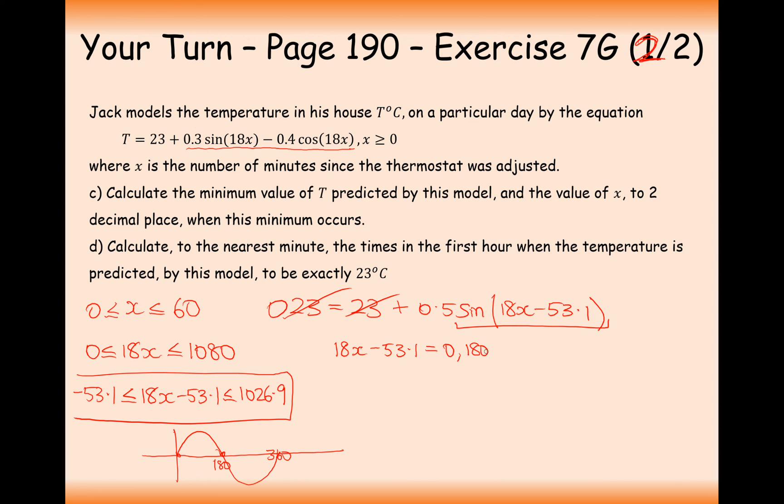So 18x minus 53.1 is going to equal 0, 180, 360, 540, 720, 900. The next one would be 1080, but that would take us above our limit. Now we've got to add 53.1 onto all of these values. So it's 53.1, 233.1, 413.1, 593.1, 773.1, and 953.1.